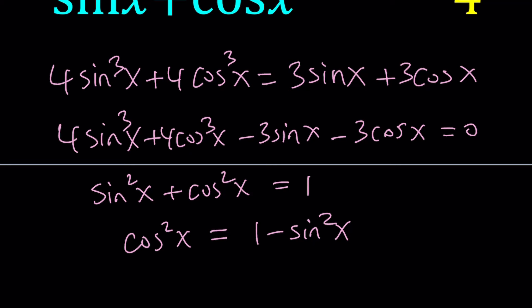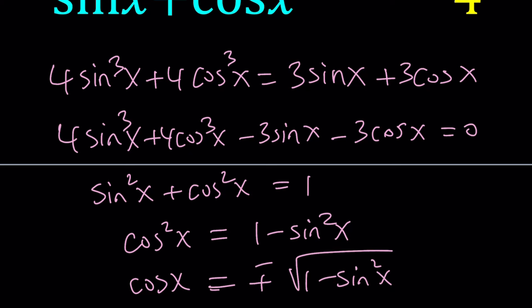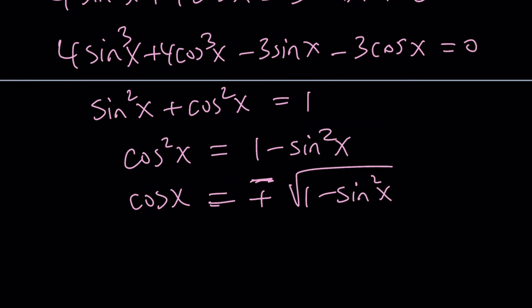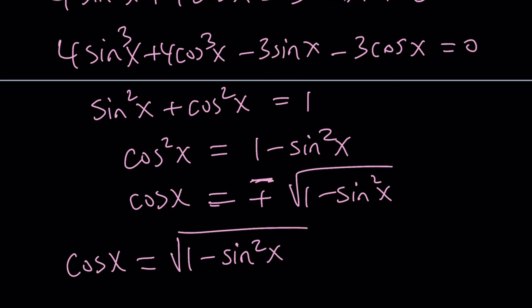So how do you handle something like this? There are a couple of different ways. We can solve for cosine: that's going to be plus or minus the square root of 1 minus sine²x. Obviously there are two options; we can try both. If we take cosine x equal to the square root of 1 minus sine²x, we can substitute that in and everything will be in terms of sine. The problem is we're going to have to deal with lots of radicals.